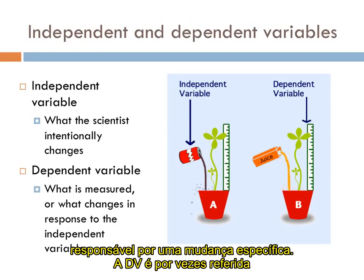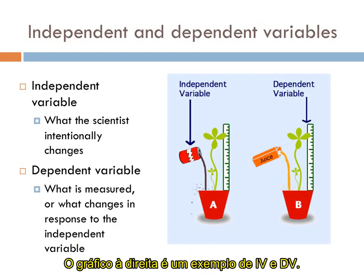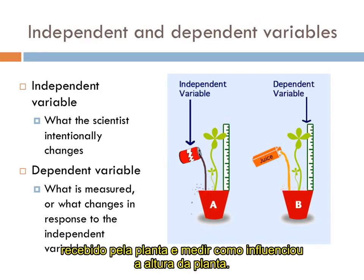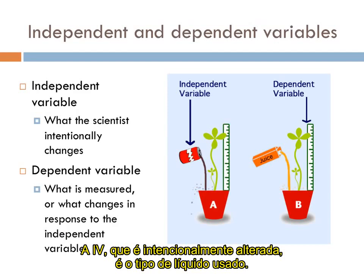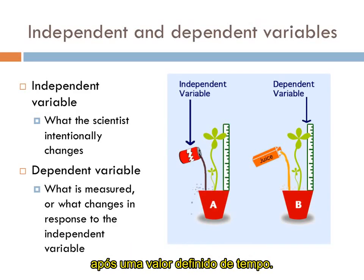The dependent variable is sometimes referred to as the measured variable. The dependent variable, or DV, is what changes in response to the IV, or independent variable, being changed. The graphic to the right provides an example: a scientist might want to change the liquid food that a plant gets and measure how that affects the height of a plant. The independent variable — that which is intentionally changed — is the type of liquid used. The dependent variable — what is being measured — is the height of the plant after a set amount of time.